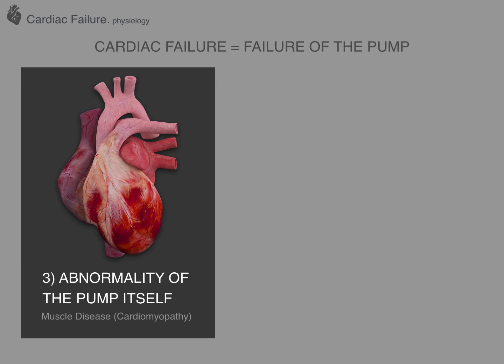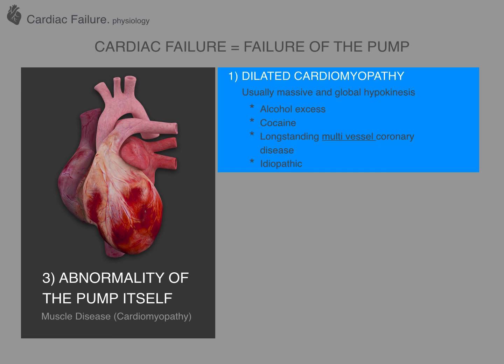Looking at abnormality of the pump itself — focusing on cardiomyopathy, the muscle disease — the first group is dilated cardiomyopathies. Usually in these patients the entire heart is not functioning well, so there is a global hypokinesis — globally impaired movement of the muscle wall — and usually these hearts are very dilated on echocardiogram. Causes include alcohol and, increasingly commonly, cocaine use. If you see a patient in their 30s presenting with sudden onset heart failure, it's really important to take a good illicit drug history.